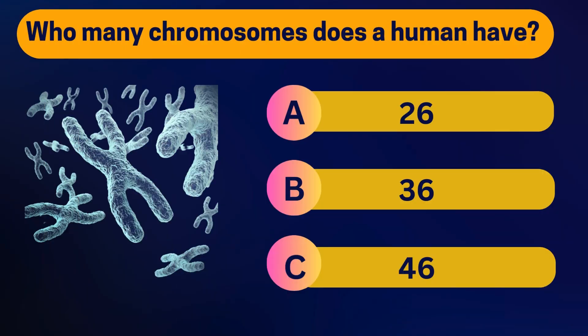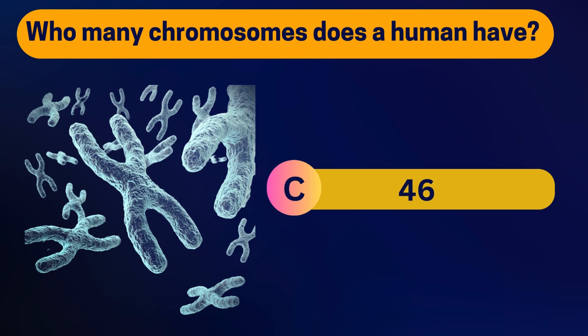How many chromosomes does a human have? 26, 36, or 46? 46. That's a total of 23 pairs.